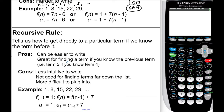A recursive rule tells us how to get to a particular term if we know the term before it. To get any term using a recursive rule, I have to know the one that came before it. If I want to know term 10, I have to know term 9. If I want to know term 397, I have to know term 396. Recursive rules can be easier to write, and I believe if you understand them, they're easier to write — though you're welcome to disagree.